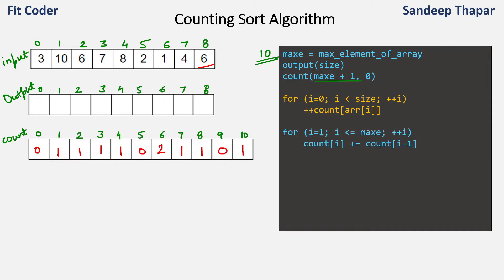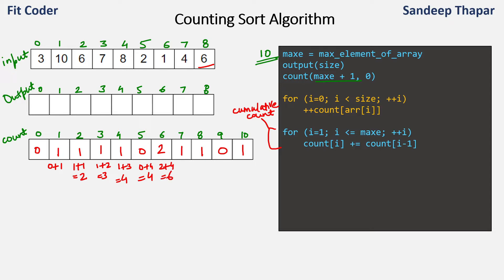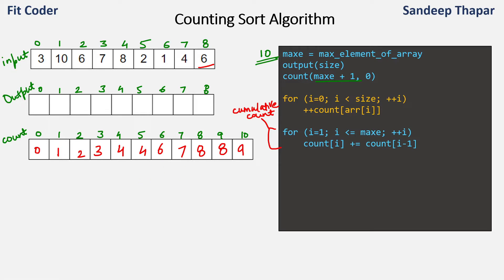In the next step we parse the count array and compute the cumulative sum. We add all previous elements: index 0 stays 0, index 1 → 0+1=1, index 2 → 1+1=2, index 3 → 1+2=3, index 4 → 1+3=4, index 5 → 0+4=4, index 6 → 2+4=6, index 7 → 1+6=7, index 8 → 1+7=8, index 9 → 0+8=8, index 10 → 1+8=9. This is our count array after the cumulative count step.